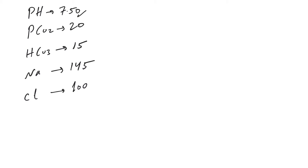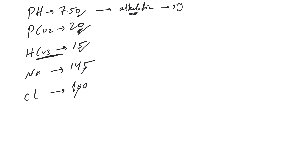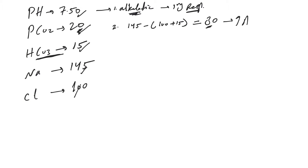The third example: pH 7.50, PCO2 of 20, bicarb 15, sodium 145, chloride 100. Remember, the bicarb in these examples comes from the serum bicarb from the CMP or BMP. This is toward the alkalotic side. Going systematically: the CO2 abnormality explains it — it's primarily respiratory alkalosis, since CO2 and pH have an inverse relationship. Then we jump to the anion gap: 145 minus 100 plus 15 equals 30. There is increased anion gap metabolic acidosis.